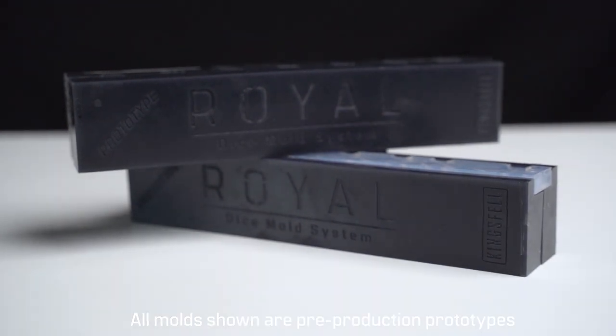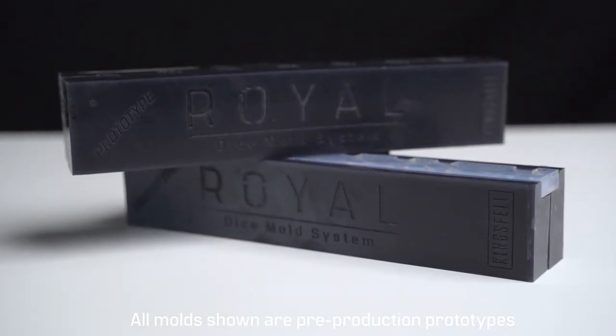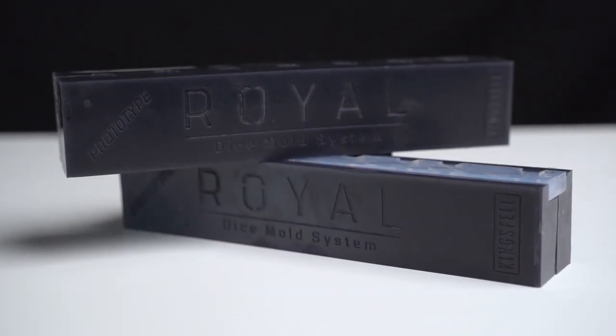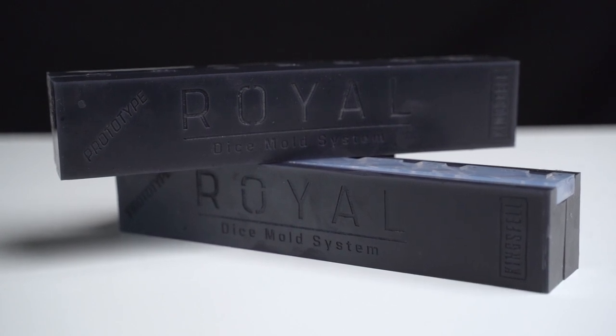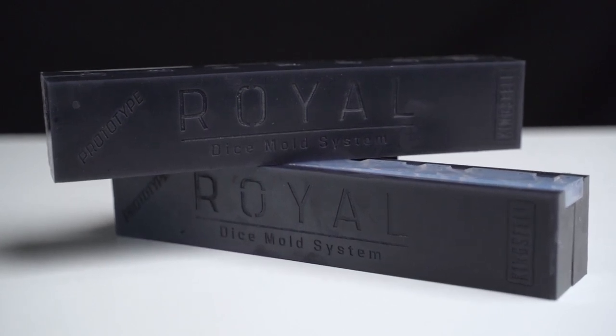Introducing the Royal Mold System. A pair of innovative dice molds designed from the ground up to make good dice fast. Let's talk about the design.